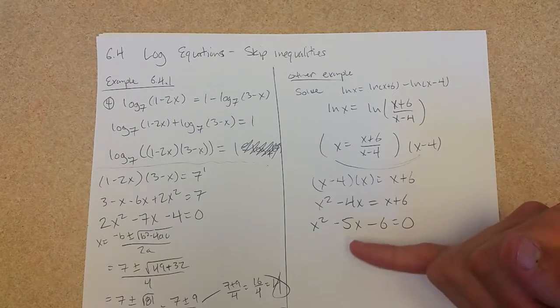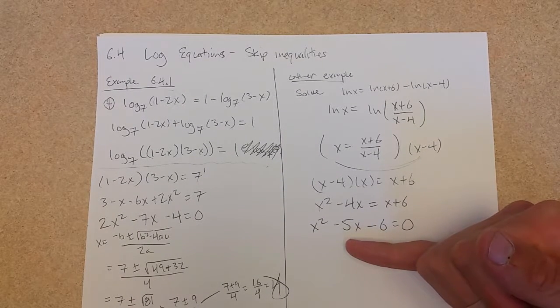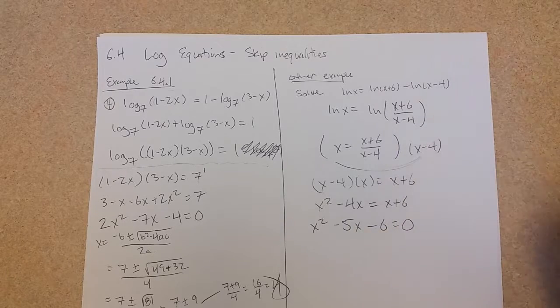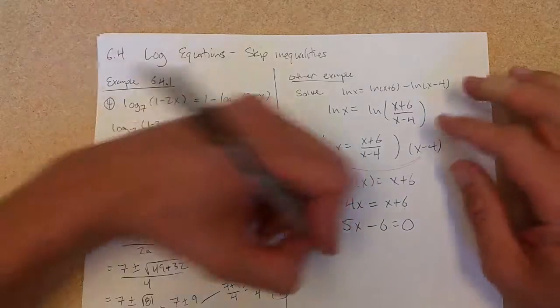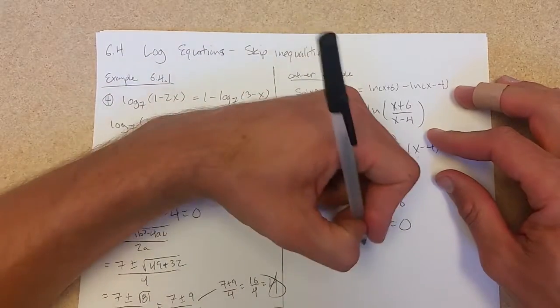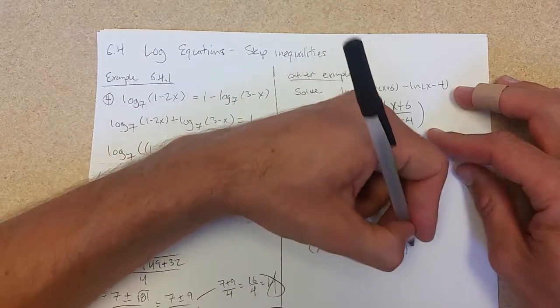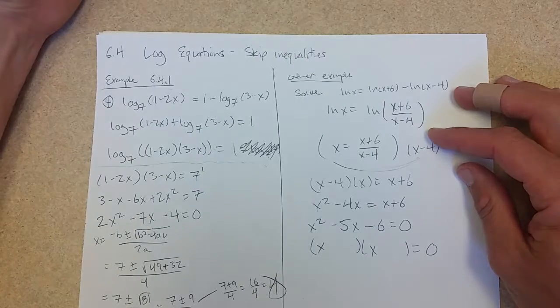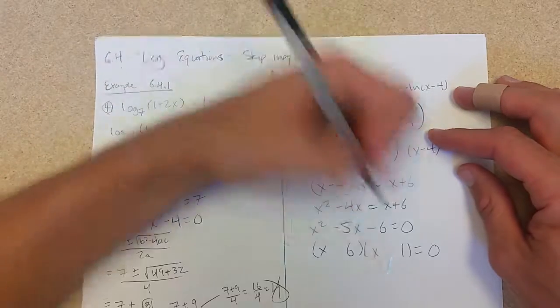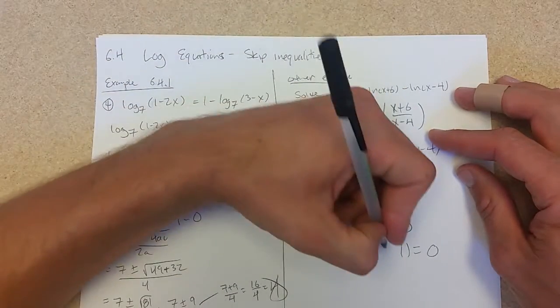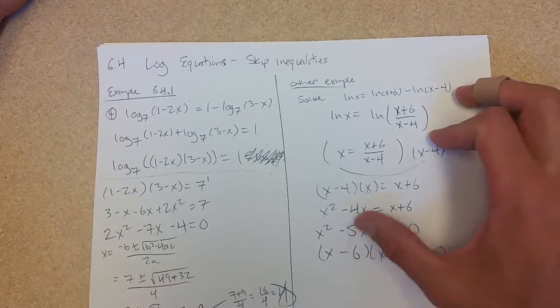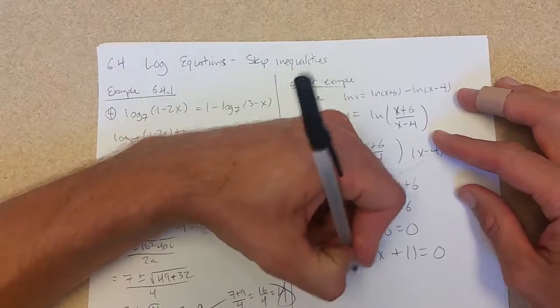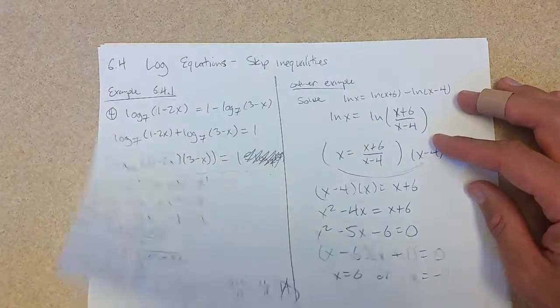Multiply to make negative 6, add to make negative 5. Hopefully we can do this. 6 and 1. Come on, I don't want to go quadratic. Minus 6 plus 1. Multiply negative 6, add negative 5.